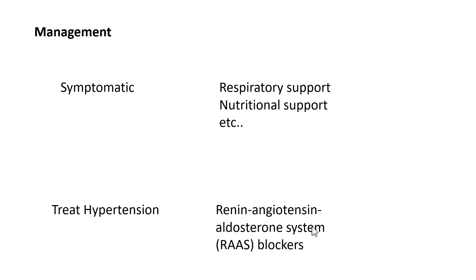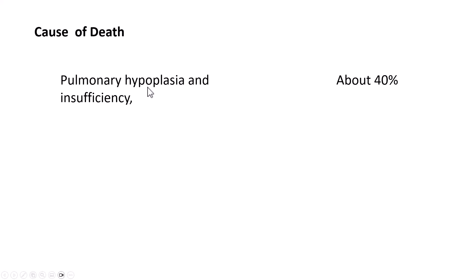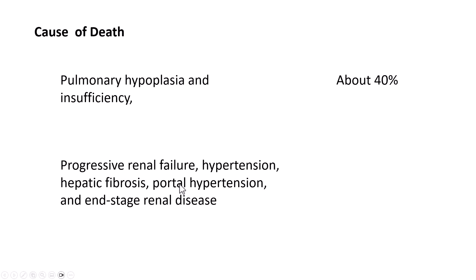The infantile and juvenile forms often present with failure to thrive or growth retardation due to altered nutritional status, along with urinary tract infections, hematuria, or renal osteodystrophy. If the liver is dominantly involved, patients can have variable degrees of congenital hepatic fibrosis. Cause of death in the neonatal and perinatal period — around 40% of cases — is pulmonary hypoplasia and insufficiency. Patients surviving longer can develop progressive renal failure, hypertension, hepatic fibrosis, portal hypertension, and ultimately end-stage renal disease.